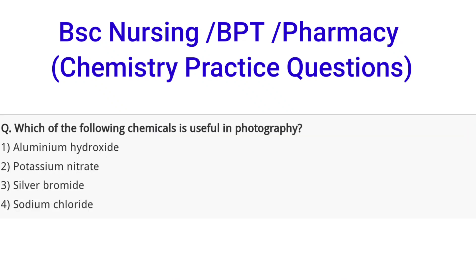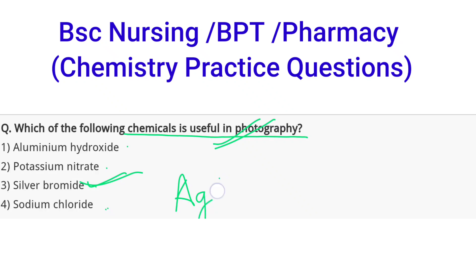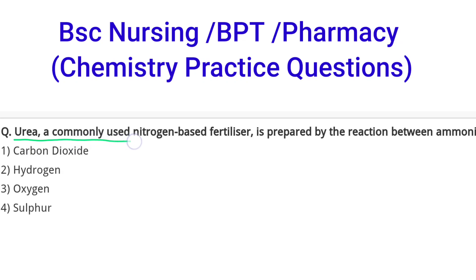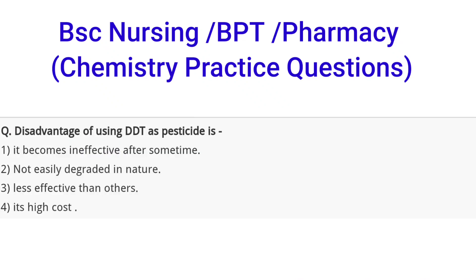Which of the following chemicals is useful in photography? The answer is silver bromide, which is used as a photography chemical. Next question: urea, a commonly used nitrogen-based fertilizer, is prepared by the reaction between ammonia and which substance? Options are carbon dioxide, hydrogen, oxygen, and sulfur. The correct option is carbon dioxide.